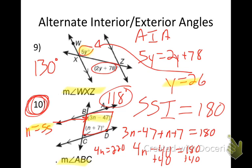Same side interior angles add up to 180 — that is something you have to be able to recognize in the assignment. Corresponding, alternate interior, and alternate exterior are set equal; same side interior angles are added and set equal to 180.